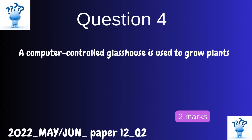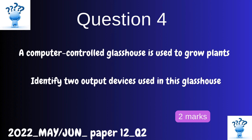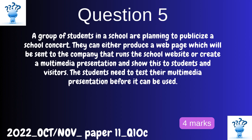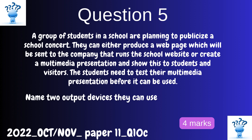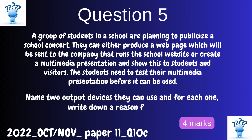Question 4. A computer-controlled glasshouse is used to grow plants. Identify two output devices used in this glasshouse. Question 5. A group of students in a school are planning to publicize a school concert. They can either produce a web page or create a multimedia presentation to show to students and visitors. Name two output devices they can use and for each one, write down a reason for its use.